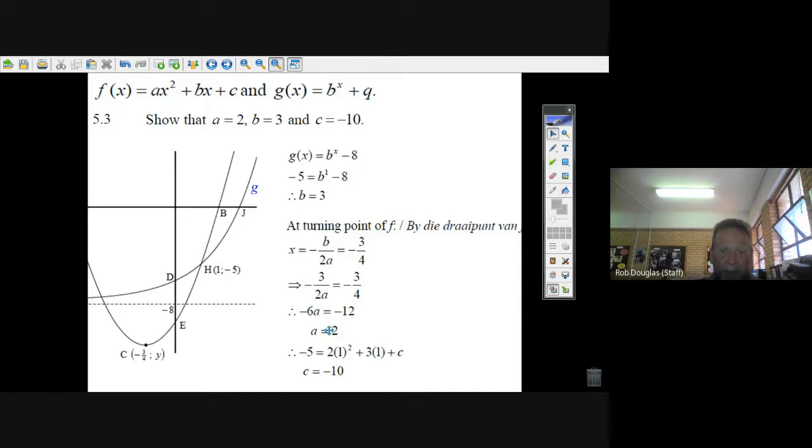And then you can take, now that we know that a is 2, we know b is 3, we can substitute 1 and minus 5 back into the parabola equation. We know what a and b are now. Now we just solve for c. Well, we've got minus 5, we've got 2 times 1 and 3 times 1, that's 5. Subtract 5, solve, and you get c equals minus 10.